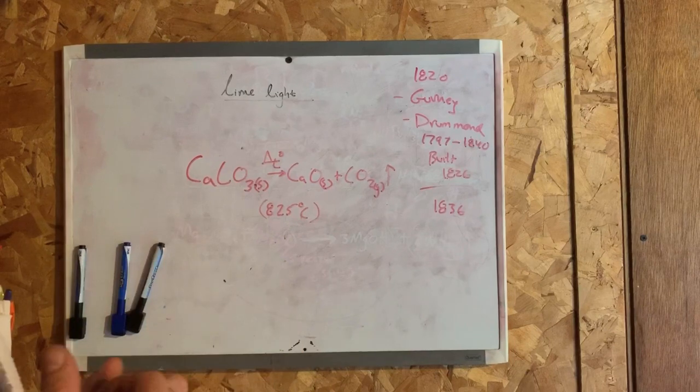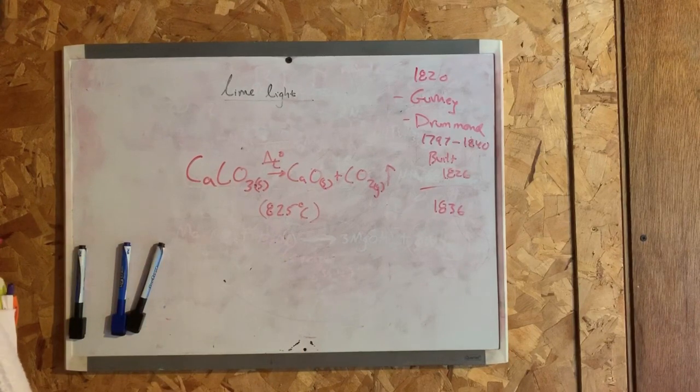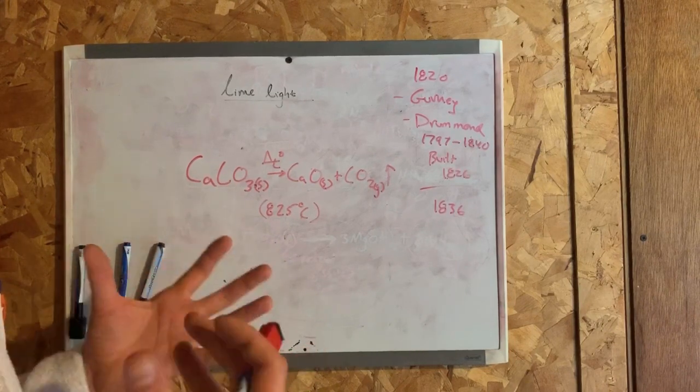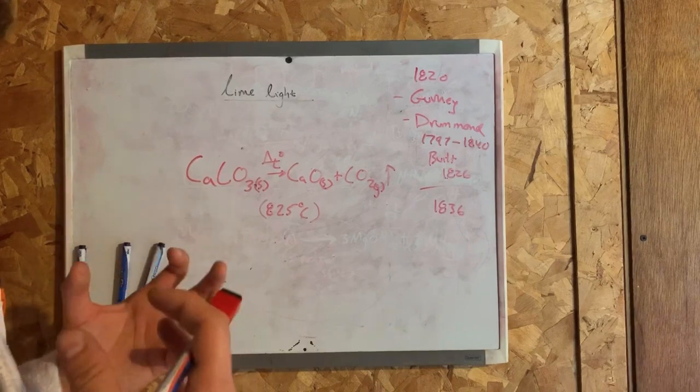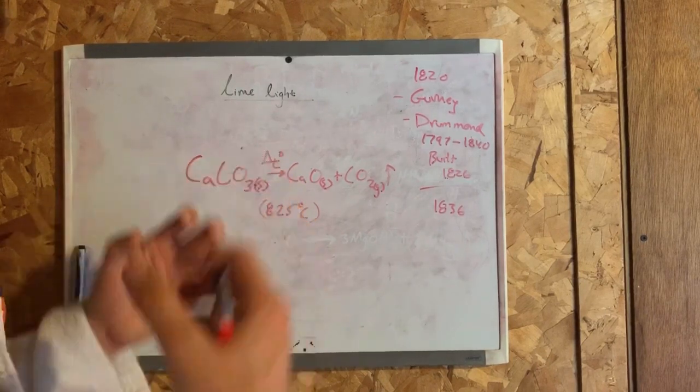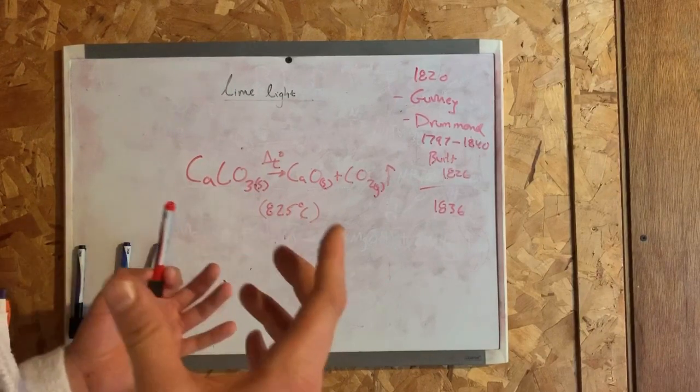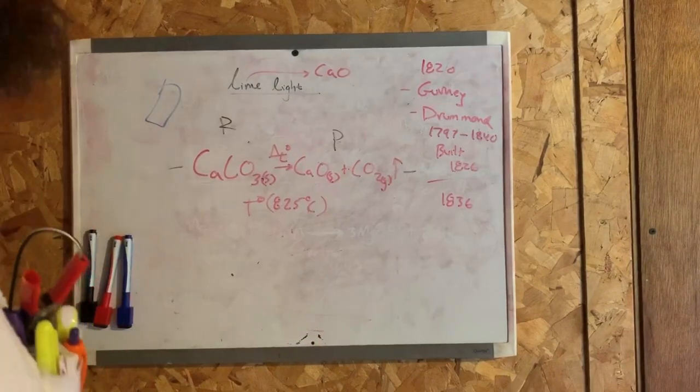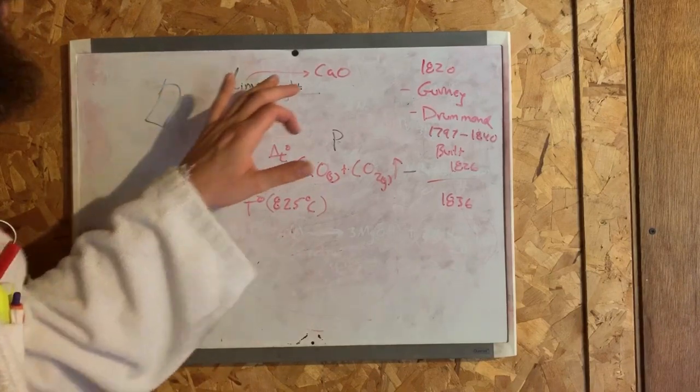Limelight was replaced by the electric arc lights in the 19th century, invented by Sir Humphry Davy. Now to obtain lime, which is calcium oxide, let's focus on this equation here.